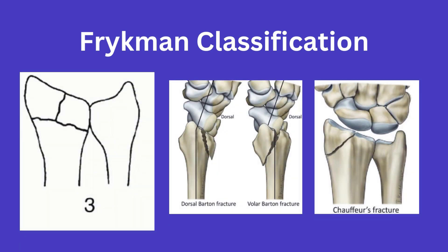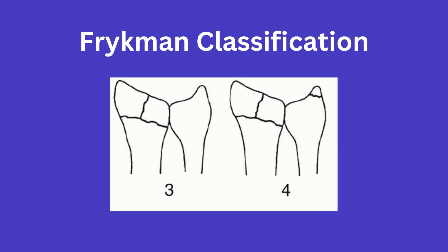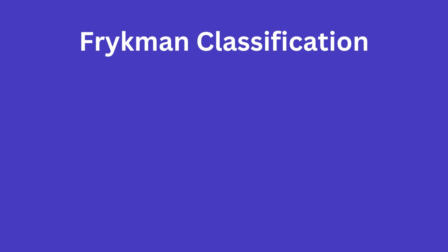Type 3 involves a fracture that includes the articular surface, namely involvement of the radiocarpal joint. Type 3 can include the Barton or chauffeur fractures. Then type 4 is simply a type 3 fracture plus an ulnar styloid fracture.